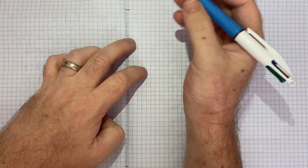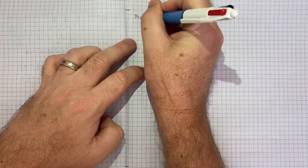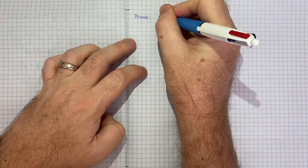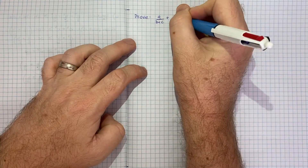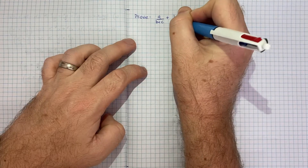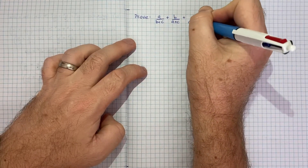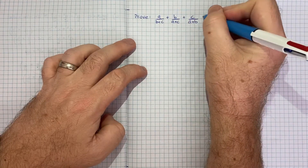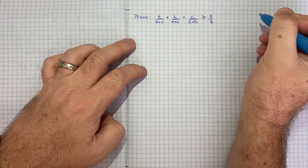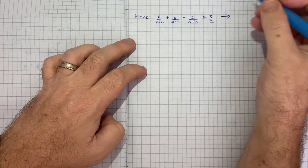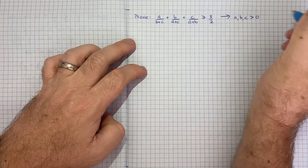So to start, I'll just write out what we're being asked to prove. The result is that a/(b+c) + b/(a+c) + c/(a+b) is greater than or equal to 3/2, noting that our starting point is a, b and c all greater than zero.